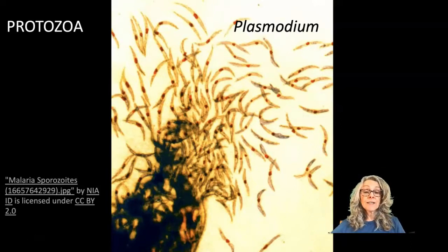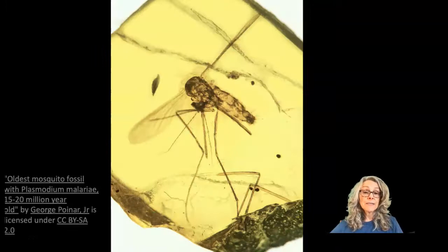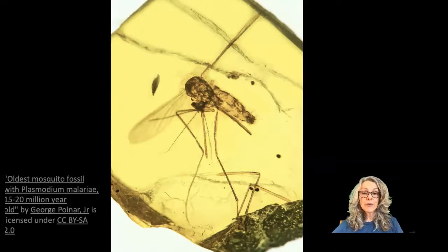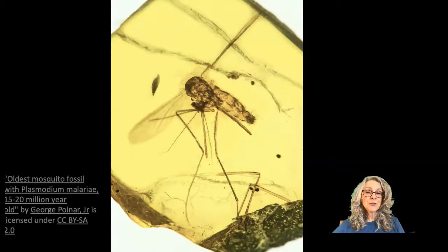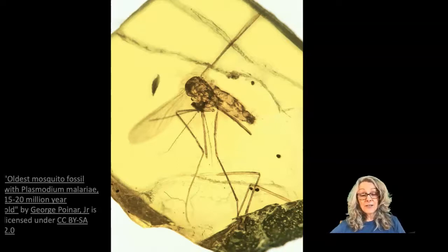Malaria is known to be transmitted by the mosquito. This is a picture of a mosquito containing plasmodium that is estimated to be about 15 to 20 million years old. This is a fossilized mosquito embedded in amber.